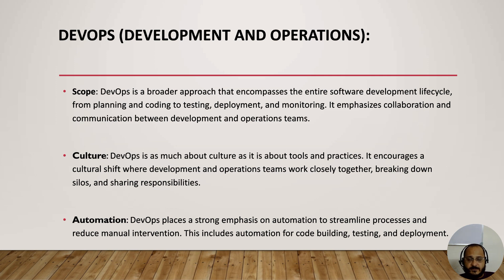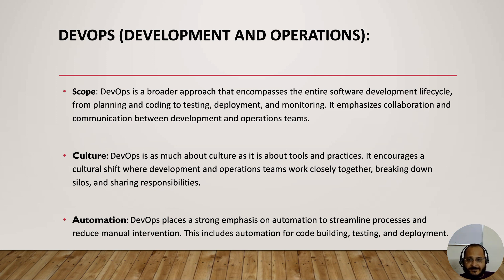The scope of DevOps is very wide because there are two teams — and in many organizations there are multiple teams — that fall under DevOps. From the development side, they build and write the code, while the operations side sets up the infrastructure to deploy the application. There are a lot of things involved: coding, deployment, monitoring, and more.